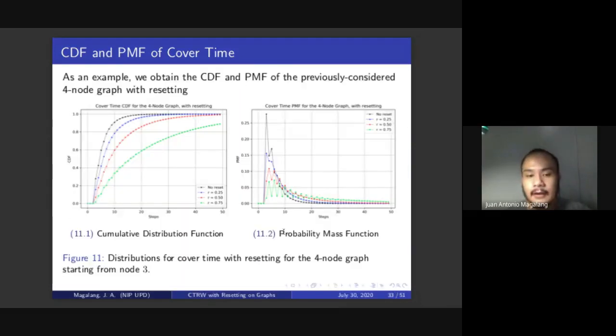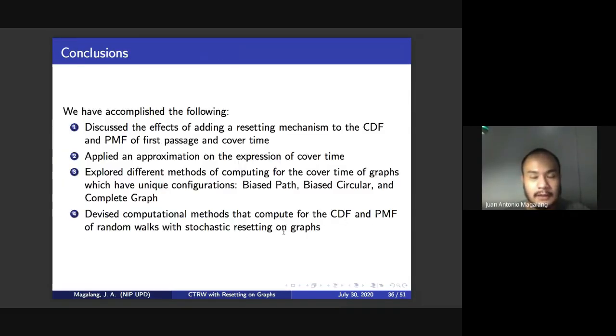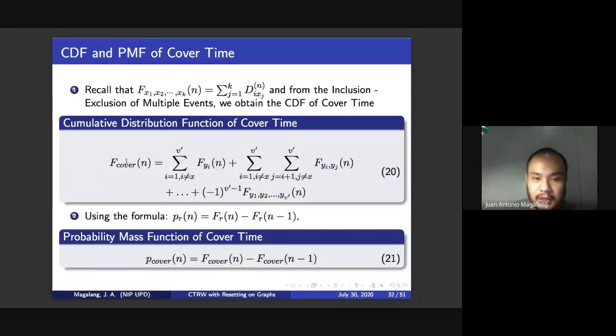So we actually formulated an approximation to this equation. And we found alternative computations for obtaining the cover time for graphs that have a specific configuration. So we considered the biased path graph, bi-circular graph, and the complete graph as well. So these have different formulations for cover time that are much more efficient than this more exact equation here in equation 20. But this is nice because we have a baseline comparison using this inclusion-exclusion of multiple events.